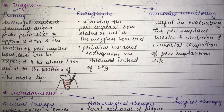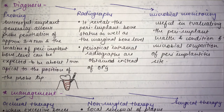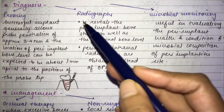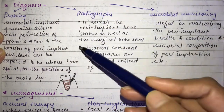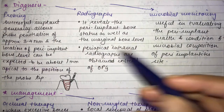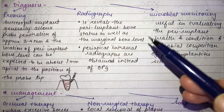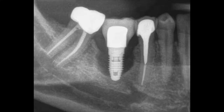Diagnosis of peri-implantitis can be done via three methods: probing, radiograph, and microbial monitoring. Microbial monitoring evaluates the peri-implant health, condition, and microbial composition of the peri-implantitis site. Radiographs reveal the peri-implant bone status and marginal bone level. Periapical intraoral radiographs are preferred over OPGs because they show bone detail more clearly.